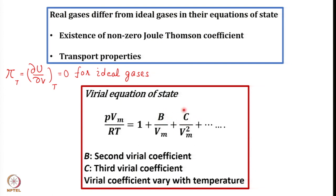In this form of the equation, B is called the second virial coefficient, C is called the third virial coefficient, and so on. These virial coefficients depend upon temperature, because when the temperature is increased, the intermolecular interactions between the gas molecules are also affected. Our purpose is to somehow connect these virial coefficients with the canonical partition function to bring non-ideality into our discussion.